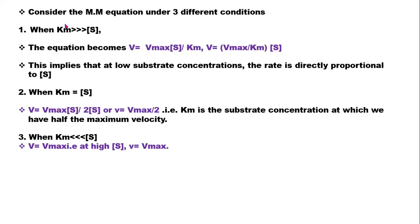When we consider the Michaelis-Menten equation under three different conditions, it changes. First, when Km is much larger than the substrate concentration, the equation becomes V = (Vmax / Km) × [S]. This implies that at low substrate concentration, velocity is directly proportional to substrate concentration.